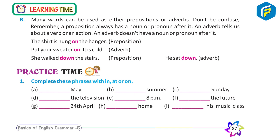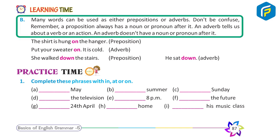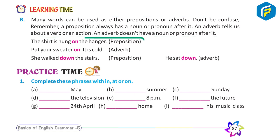Learning Time B: Many words can be used as either prepositions or adverbs. Don't be confused. Remember: a preposition always has a noun or pronoun after it. An adverb tells us about a verb or an action. An adverb doesn't have a noun or pronoun after it.